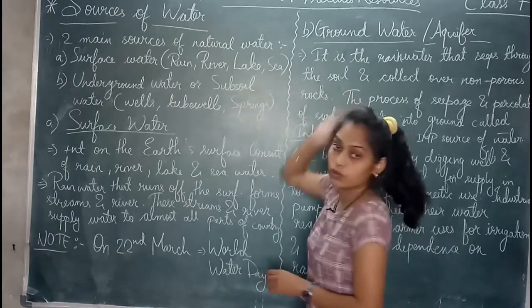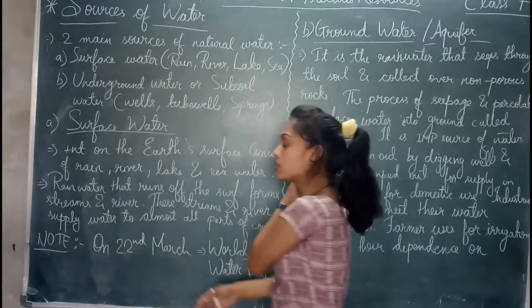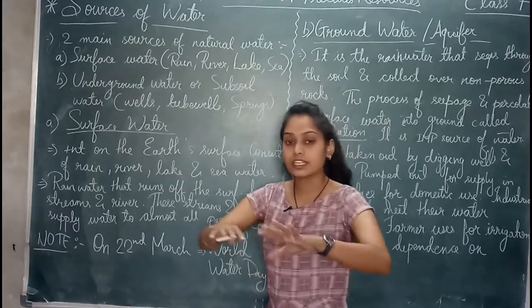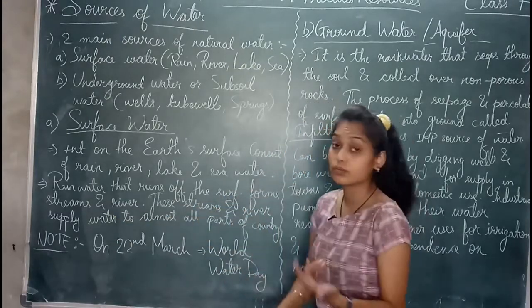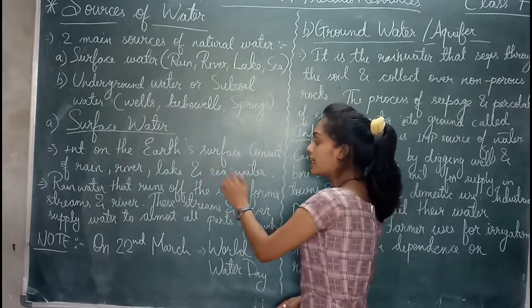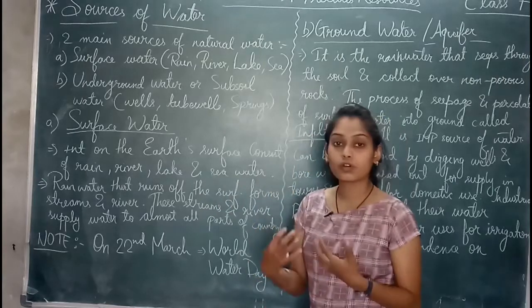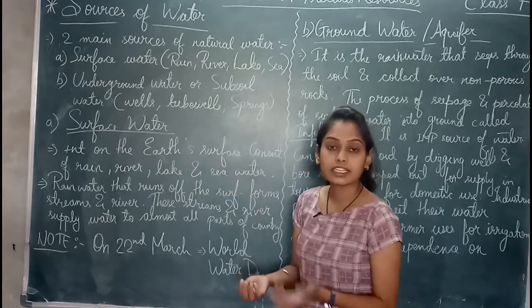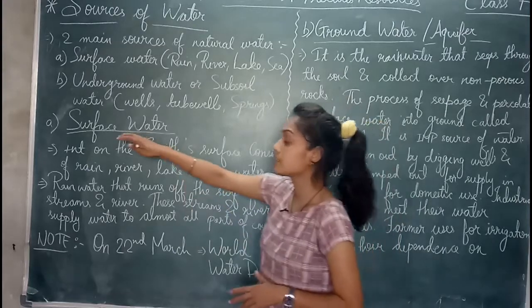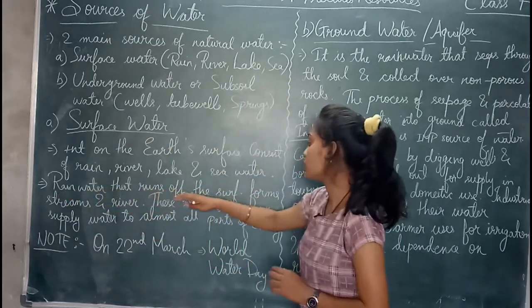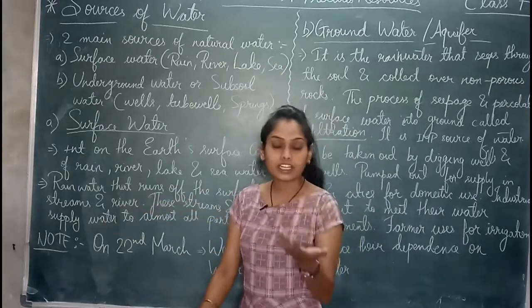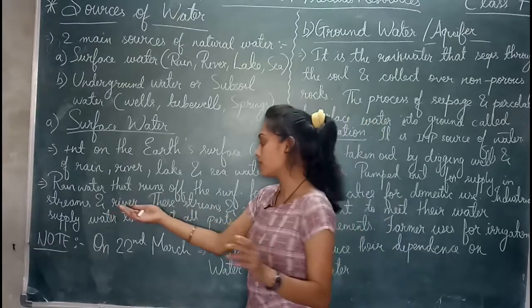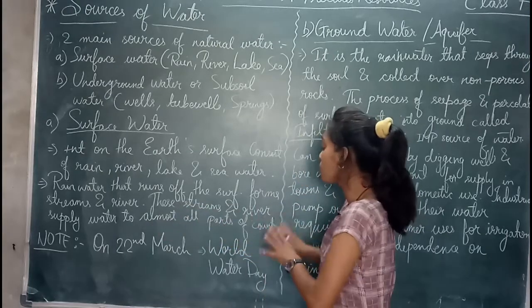Surface water is present on the earth's surface. Surface water consists of rain, river, lake, and sea waters. Streams and rivers supply water to almost all parts of the country.